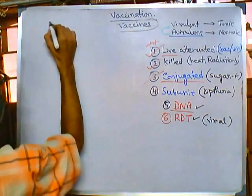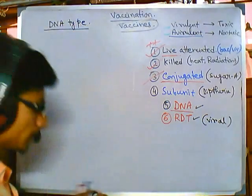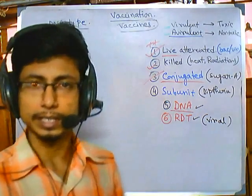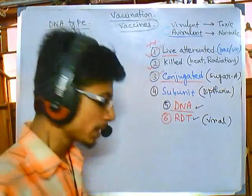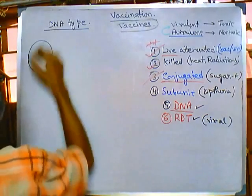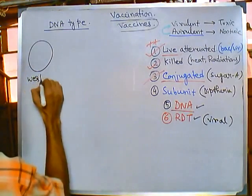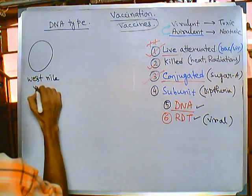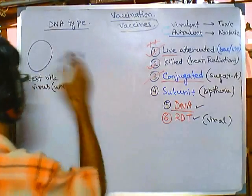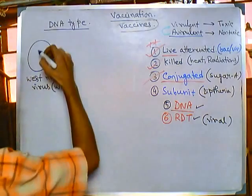In this video we will be talking about DNA-type vaccines. What we are doing here is taking DNA and utilizing different molecular biological techniques to modify the DNA, then incorporating it. The basic example for this is that we take DNA from West Nile virus, also called WNV. This West Nile virus has a single-stranded RNA genome.